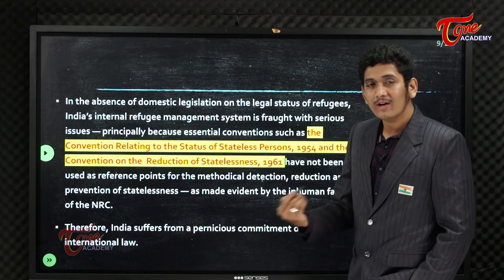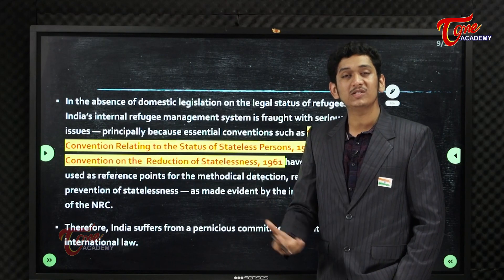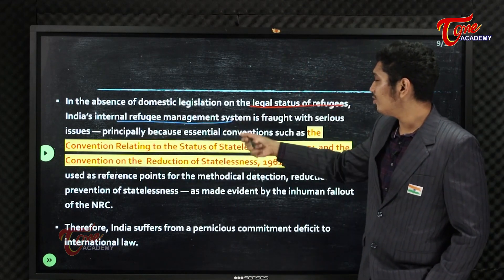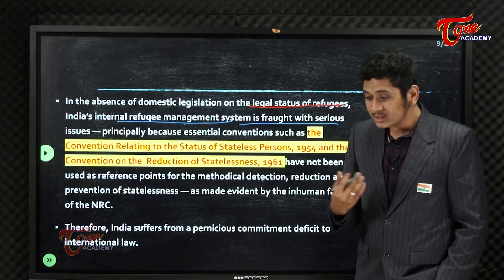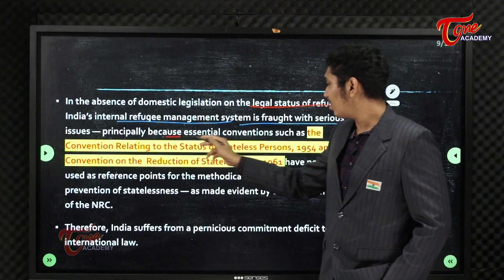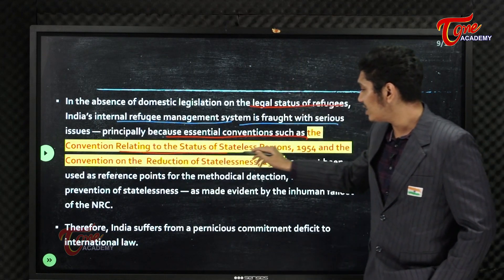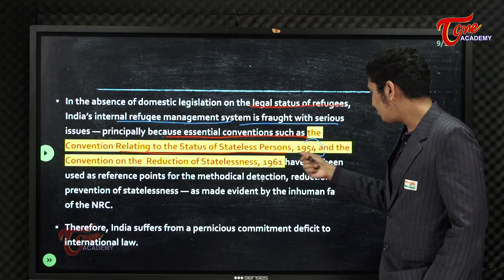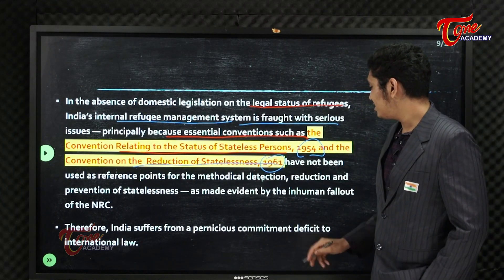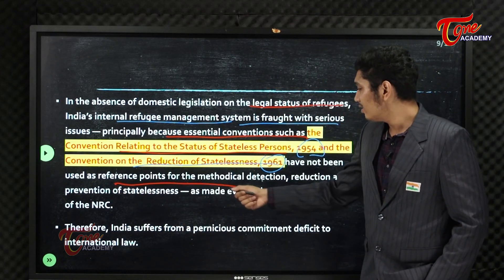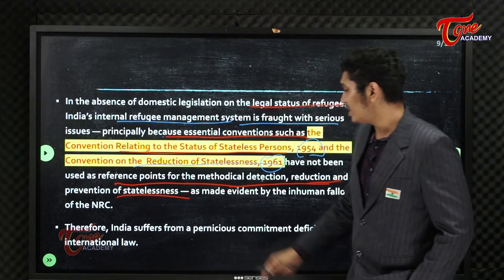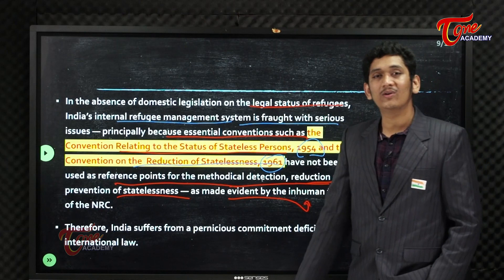In the absence of domestic legislation, we do not have a law to deal with such an influx of foreigners or illegal migrants. India's internal refugee management system is fraught with serious issues because we haven't signed important refugee treaties under the United Nations — principally the Convention Relating to the Status of Stateless Persons 1954 and the Convention on the Reduction of Statelessness 1961. These conventions have not been used as a reference point for the methodological detection of people listed in the NRC, nor for the reduction and prevention of statelessness.